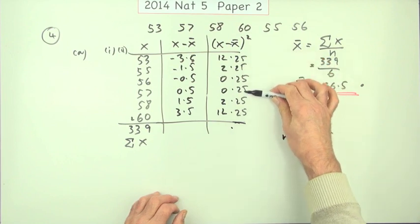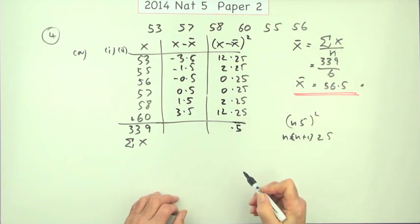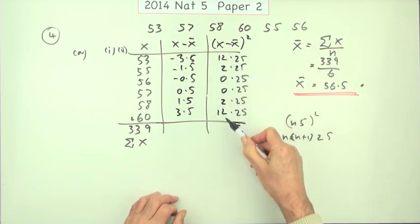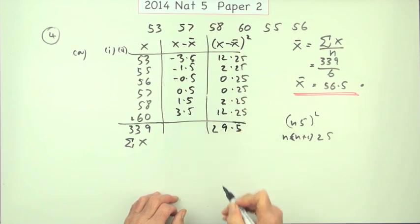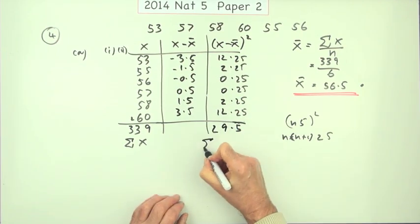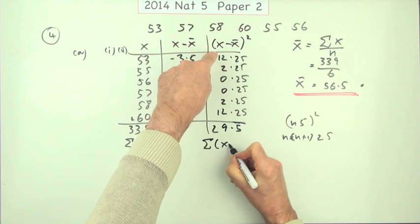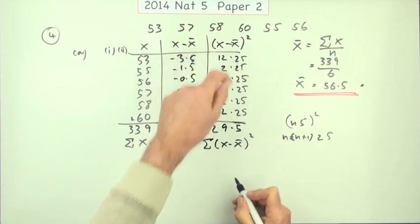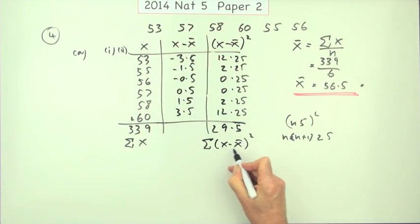And again I can add this up without a calculator. Because each of these quarters, 4 of them will make 1. So that's 1 and a half, 1.5. 1 to carry. 2, 4, 6, 8, 9. 29.5. And that's the sum of these things, the x minus x bar squared. The sum of the squares of the deviations. How far each of the numbers is away from the mean.